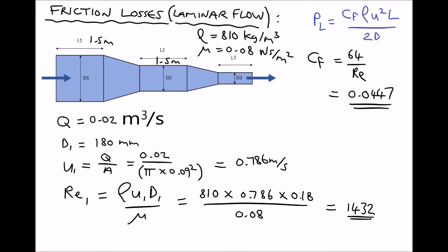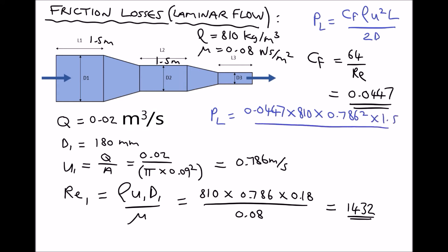The final step is to plug everything into our formula. The pressure loss equals the coefficient of friction 0.0447, times the density 810, times the velocity squared 0.786 squared, times the pipe length 1.5 meters, all divided by 2 times our diameter — remembering to work in meters — so 0.18. Running that through the calculator gives us a pressure loss in the first section of the pipe equal to 93.20 pascals.